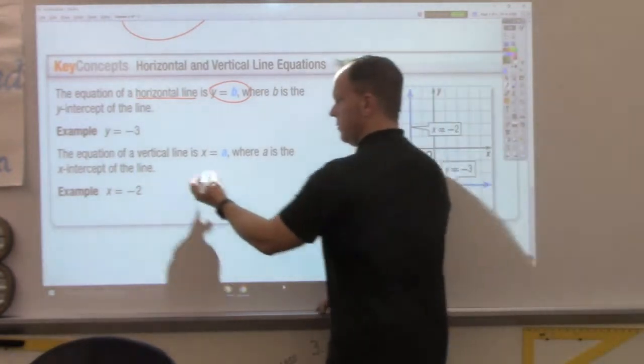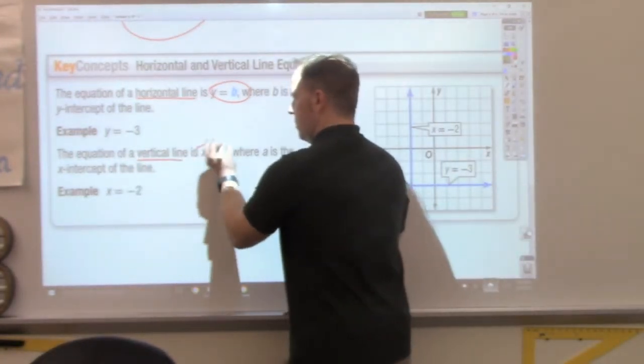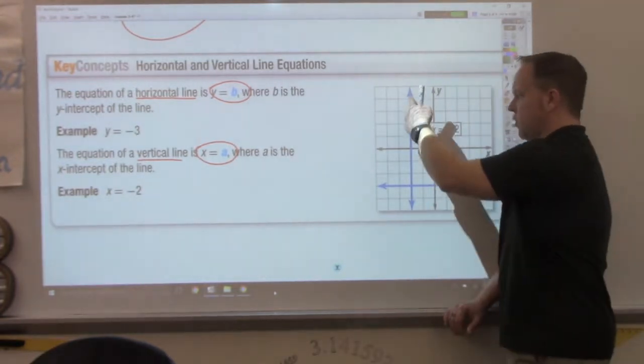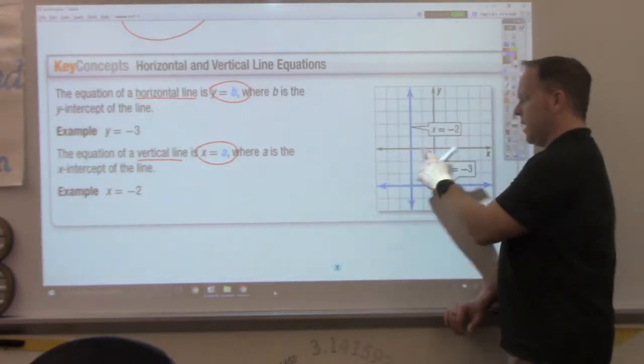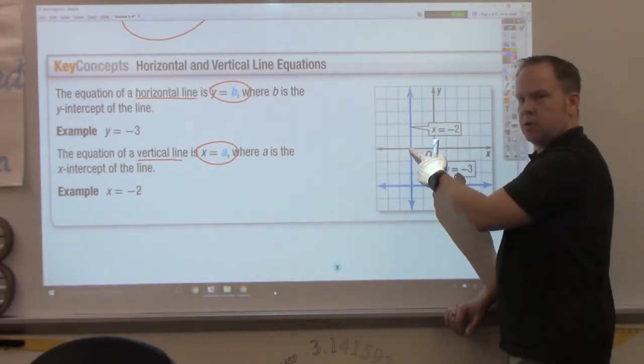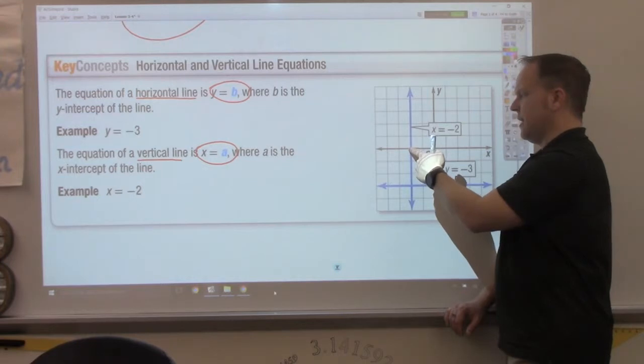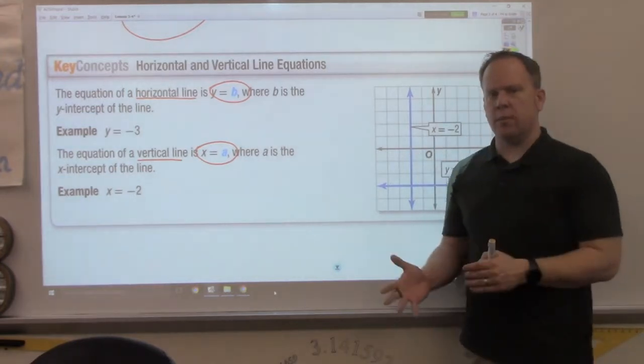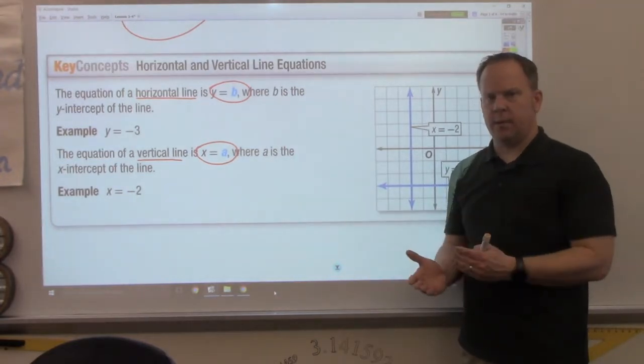Vertical line is x equals some number. That number would be the x-intercept. So, this vertical line crosses the x-axis at negative 2. So, the equation for this vertical line is x equals negative 2. So, horizontal lines is y equals a number. Vertical lines is x equals some number.